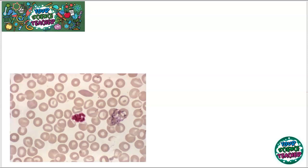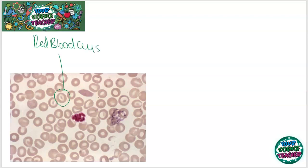Blood is a key part of how we transport substances around our bodies, and blood is more complex than it first looks. Look at this microscope image of blood and you can see some of the key components. These donut-shaped cells are perhaps what you're most familiar with — these are red blood cells. Red blood cells actually only account for 40% to 45% of blood.